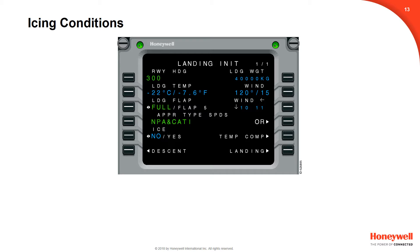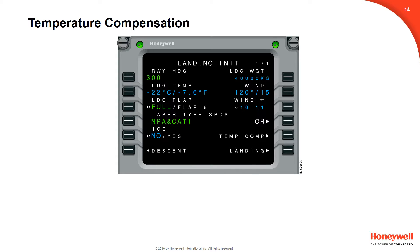The landing field ice condition selection and prompt are shown on line 5 left. To change the selection, use line select key 5 left to toggle between yes and no. The active selection is shown in a large cyan font. If temperature compensation has been enabled, the temp comp prompt will be displayed at 5 right. Temperature compensation technique is covered in a separate training webinar. To go to the landing page, select the landing prompt at line select key 6 right.